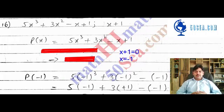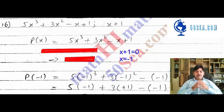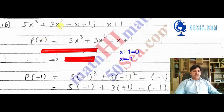Bismillahirrahmanirrahim. This is Sayyid Muhammad Hassanadar from mathemath.com. Let's start with question number 16 of exercise 2.5. The statement of this question is 5x cubed plus 3x squared minus x plus 1 and x plus 1.